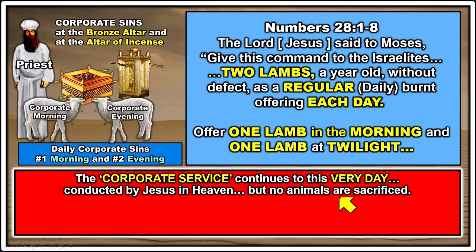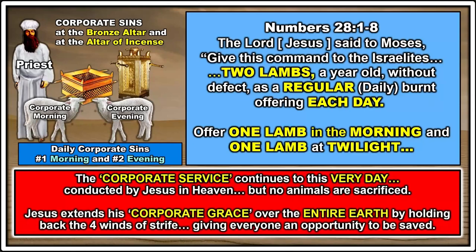The corporate service actually continues to this very day in heaven, conducted by Jesus — but in heaven there are no animals being sacrificed. Jesus extends his corporate grace over the entire earth by holding back the four winds of strife talked about in the Bible, giving everyone on earth the opportunity to be saved. Otherwise we would all be instantly killed, but Jesus stepped in the way between God's wrath for sin and gives us opportunity to accept his sacrifice and have eternal life.